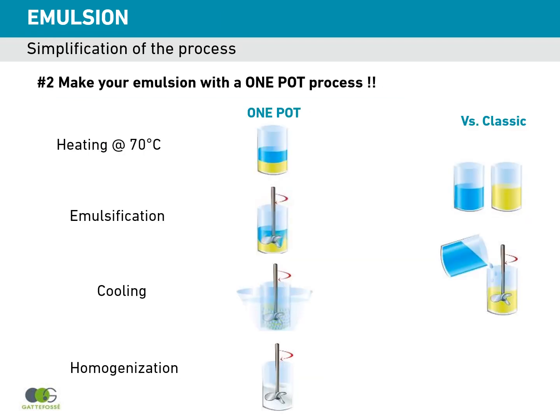The second advantage of this emulsifier is that you can make your emulsion with a one-pot process. One-pot process means you put all ingredients together in a single vessel. You heat the different phases at 70 degrees, then you emulsify, cool down and homogenize. You are not obliged to have two separate phases from the beginning.